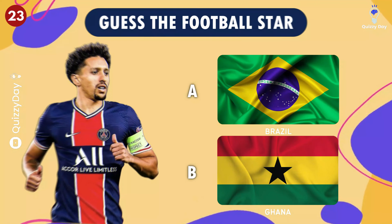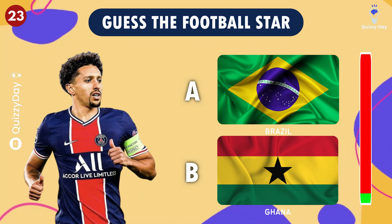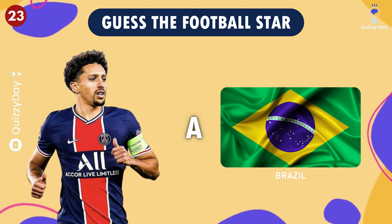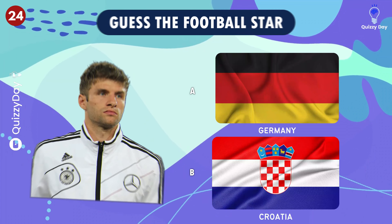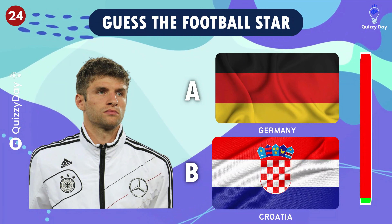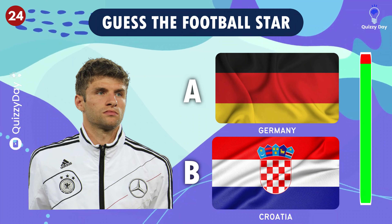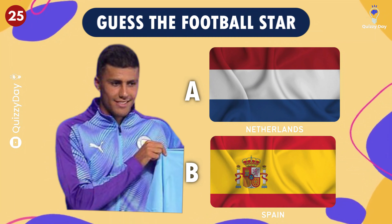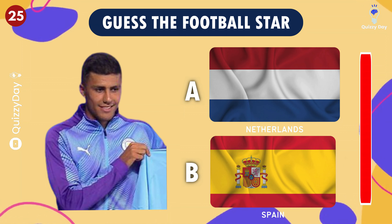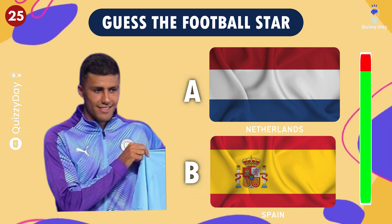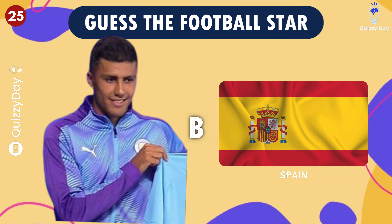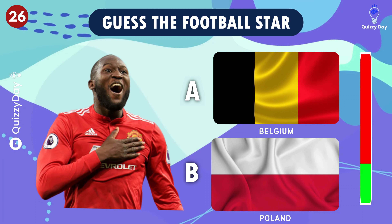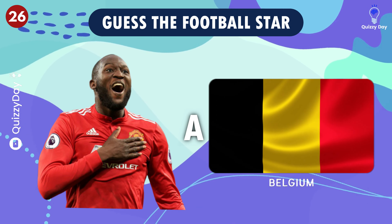Germany. Up next — the correct answer is Brazil. Question number 24 — correct, it's Germany. What team is he playing for? You got it! Spain. And lastly — that's right! Belgium.